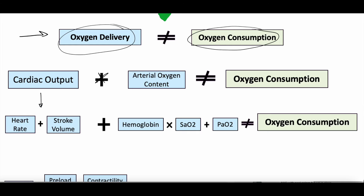Cardiac output breaks down into heart rate and stroke volume. Heart rate is the number of times the heart is squeezing — how many times per minute it pumps blood toward the tissues. Stroke volume is the volume of blood the heart pumps with each squeeze. For example, if heart rate is 60 beats per minute and stroke volume is 50 cc's, cardiac output is 60 × 50 = 3,000 mL — or 3 liters — per minute. So now we've broken down cardiac output. But what about arterial oxygen content?